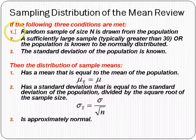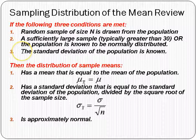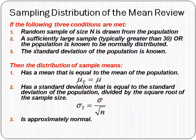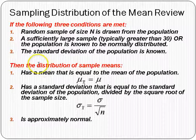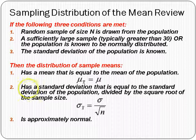If three conditions are met — that you have a random sample of some size n drawn from the population; the sample is sufficiently large, which typically means greater than 30, or the population is known to be normally distributed; and the standard deviation of the population is known — then we can say something about the sampling distribution, the distribution of sample means.